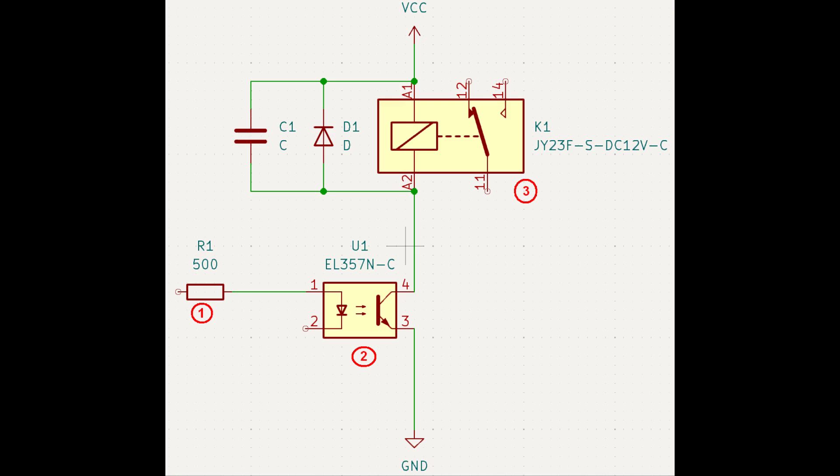There are three things we can change to fix this. One, we can send more input current towards the optocoupler. Two, we can select an optocoupler with a higher CTR. Or three, we can select a relay with a lower pickup voltage.